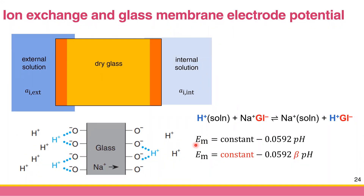The membrane potential for the glass membrane electrode is: E_membrane = constant − 0.0592 × pH. This is derived from the Nernst equation. Note that the coefficient 0.0592 is valid only at 25°C. If temperature changes, this coefficient changes and you must multiply by a temperature-dependent constant beta.